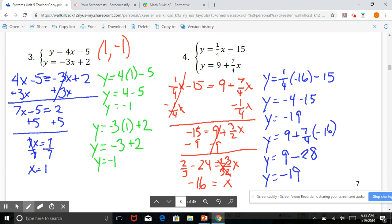So our final solution is negative 16, negative 19. So you're on your own now. Go ahead and see if you can do the following equations on your own.